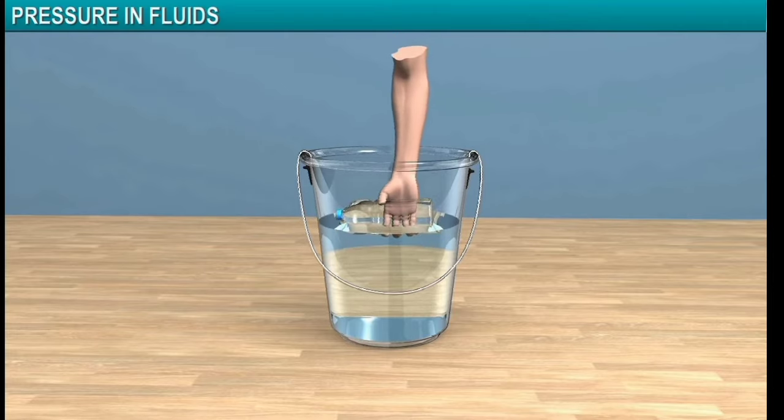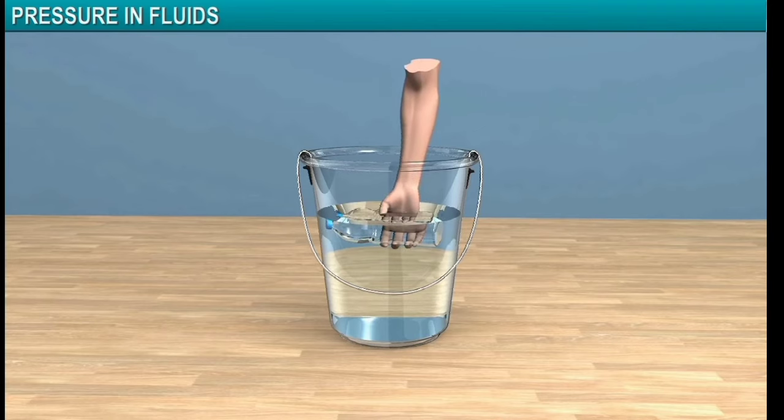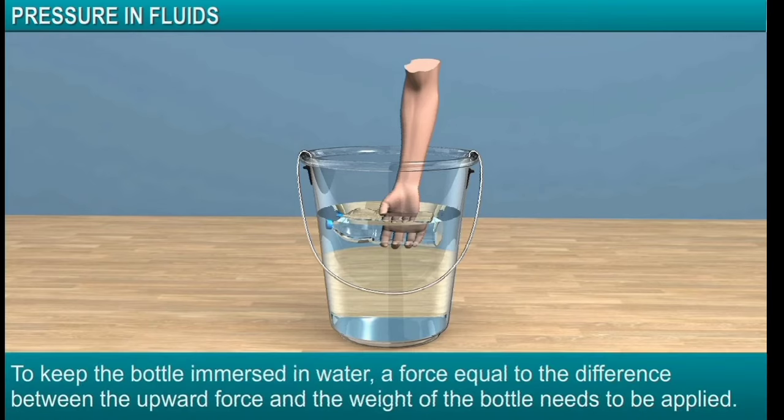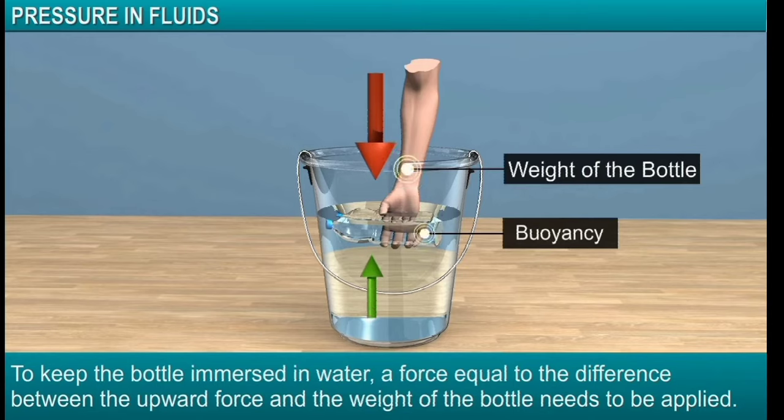In order to make the bottle immerse completely in water, the volume of water equivalent to that of the bottle must be displaced. To keep the bottle completely immersed, the upward force on the bottle due to water must be balanced. This can be achieved by an externally applied force acting downwards. This force must at least be equal to the difference between the upward force and the weight of the bottle.